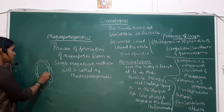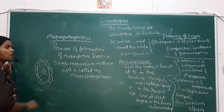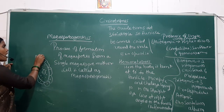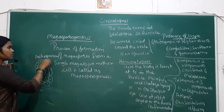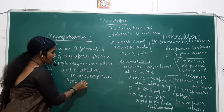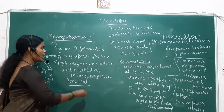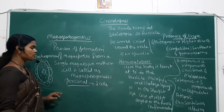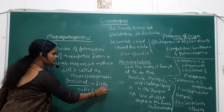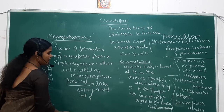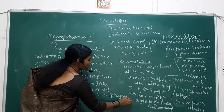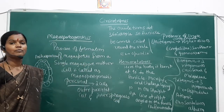The nucellar region undergoes periclinal division. This is called the archesporium. The archesporium undergoes periclinal division and forms two cells: the outer parietal cell and the inner sporogenous cell.